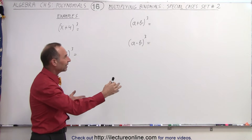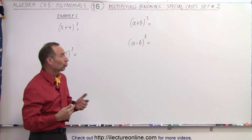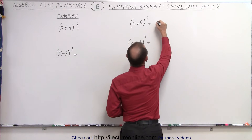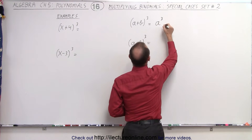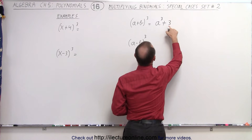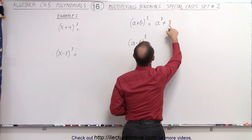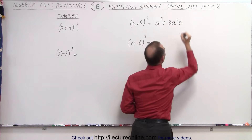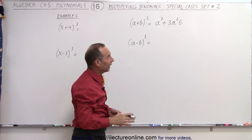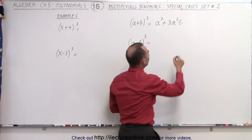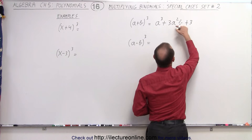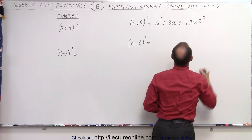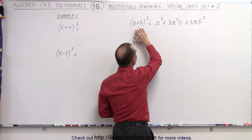Before we show you how to actually get that answer, we're going to show you the shortcut first. What you do here is you take the first term and cube it. Then plus three times — the numerical coefficient will be three — the first term squared and the second term to the first power. Then we have another term: plus three times the first term to the first power and the second term to the second power. And then finally, the last term cubed.